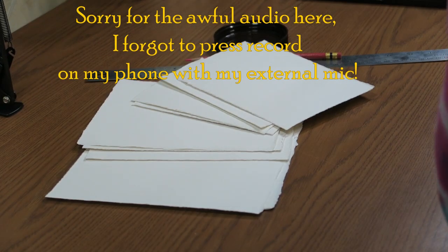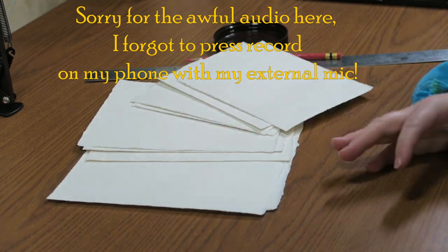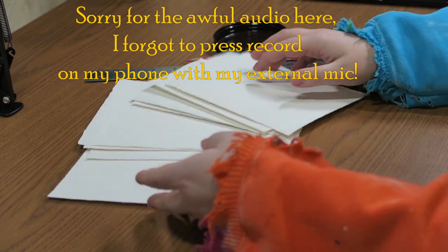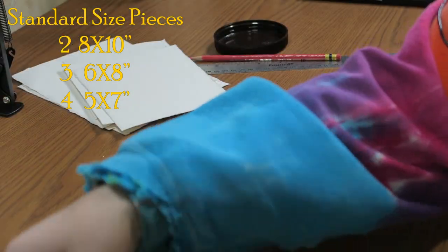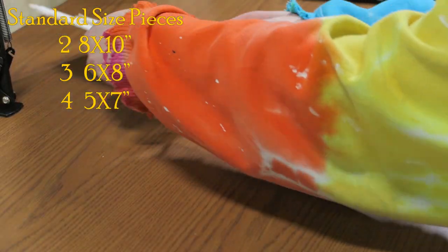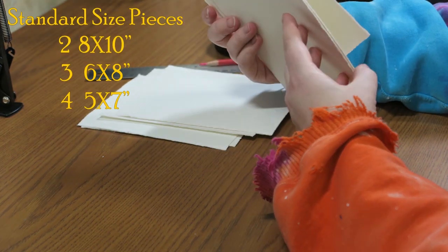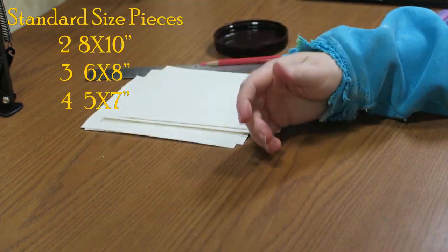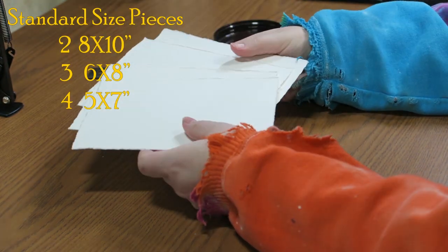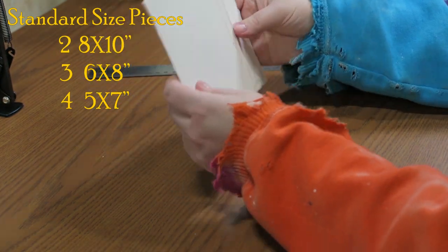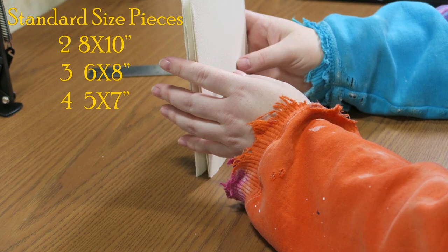All right, so here is all the paper. So from one full sheet Arches cold pressed, I have two big eight by tens, I have three six by eights, and then I have four full-size five by six, five by seven.